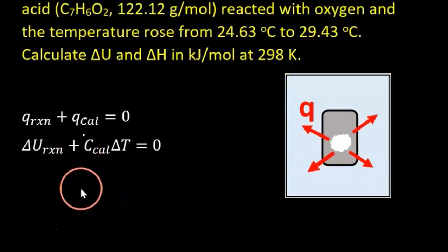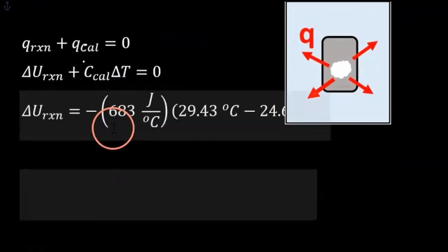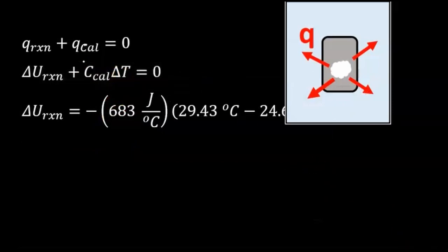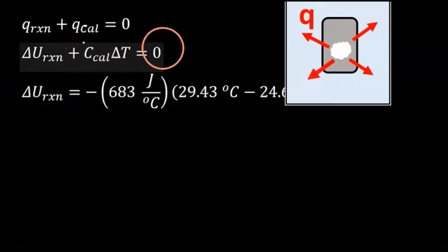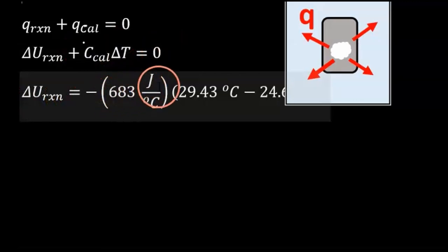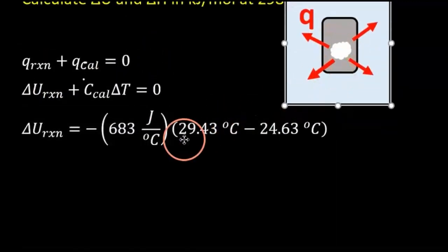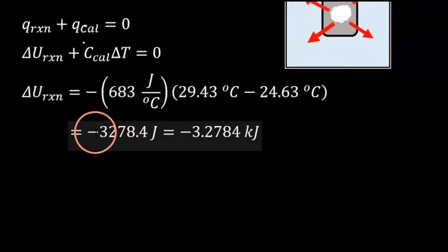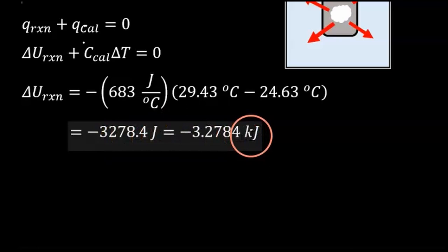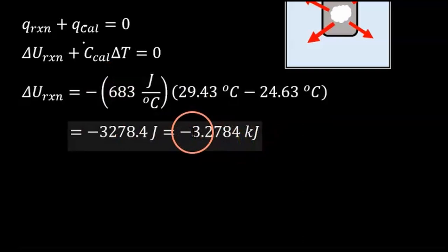The heat transfer of the calorimeter equals the heat capacity (683 joules per degree Celsius) times the temperature change, all equaling zero. Rearranging, the change in internal energy equals negative 683 times (29.43 minus 24.63), giving negative 3,278.4 joules, or negative 3.2784 kilojoules. But this is in kilojoules — we want kilojoules per mole.